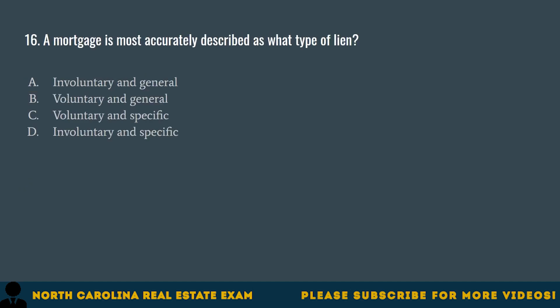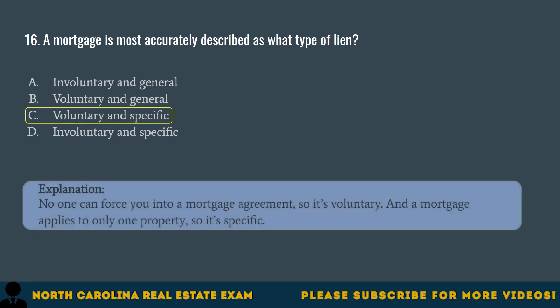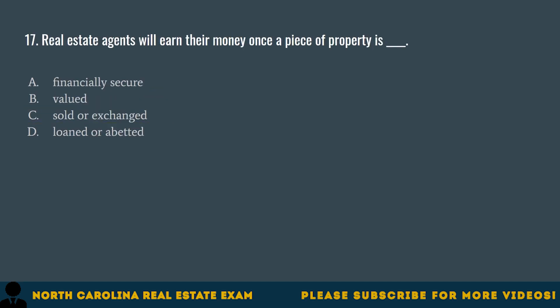Question 16. A mortgage is most accurately described as what type of lien? A. Involuntary and general. B. Voluntary and general. C. Voluntary and specific. D. Involuntary and specific. The correct answer is C. Voluntary and specific. No one can force you into a mortgage agreement, so it's voluntary, and a mortgage applies to only one property, so it's specific.